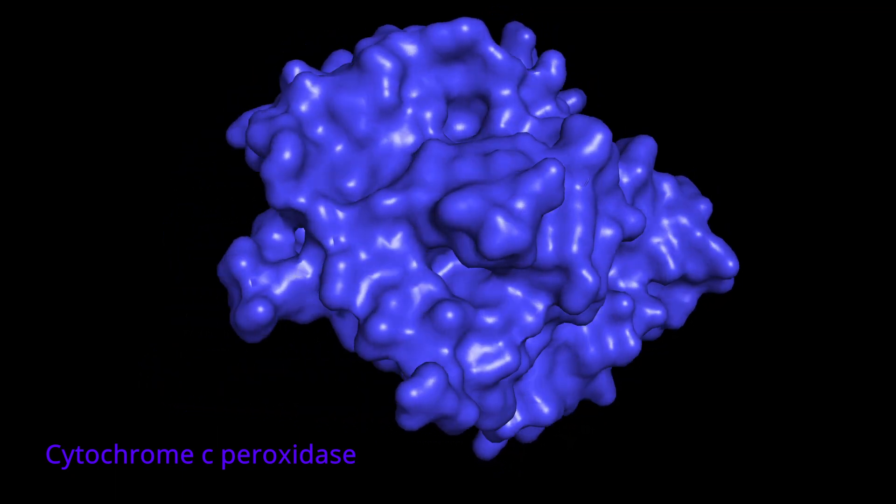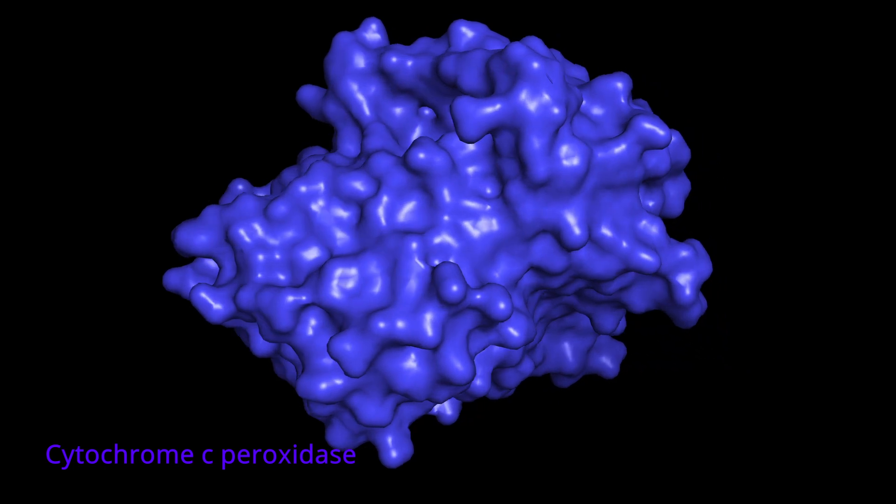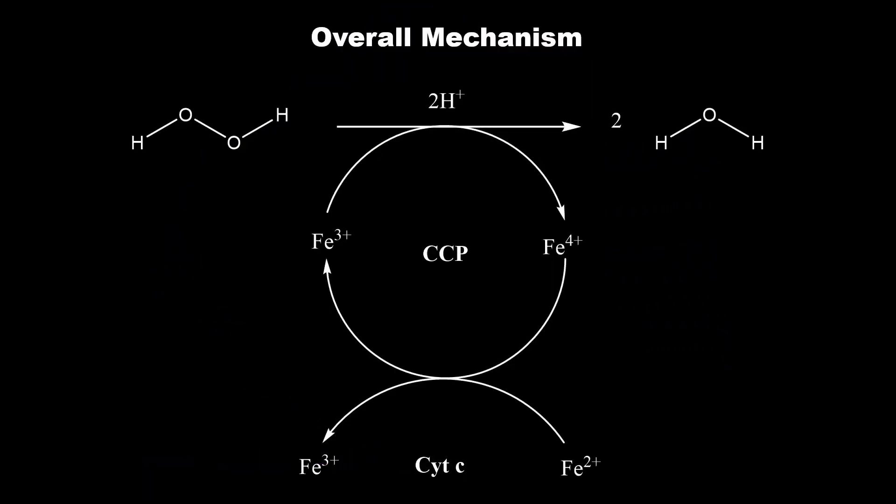Cytochrome c peroxidase is a water-soluble heme-containing enzyme found in the cytosol. This belongs to the peroxidase family. It takes up electrons from cytochrome c and reduces hydrogen peroxide to water.